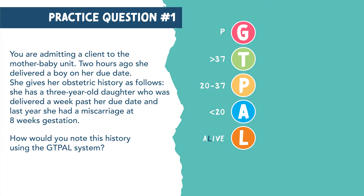So let's break apart this sentence by sentence. Two hours ago, she delivered a boy on her due date. So she was pregnant with this baby — G1. She delivered on her due date, which is term — T1. And now she has a living child — L1.